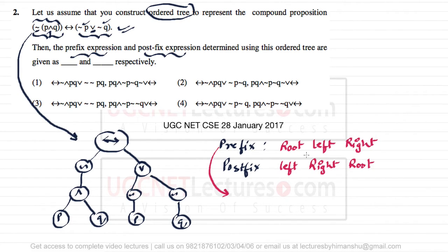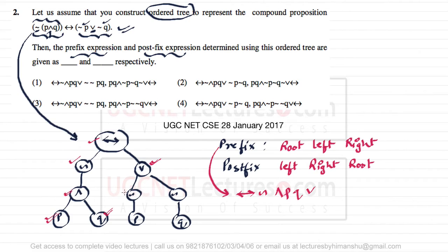In prefix we do root, then left, then right. So we first print the root, which is the double implication. Then we visit the left subtree and print negation, then visit its left subtree and print 'and', then print P, then Q. Coming back to the right subtree of the double implication, we print 'or', then on its left we print negation, then P, then negation, then Q. This is the complete prefix expression.